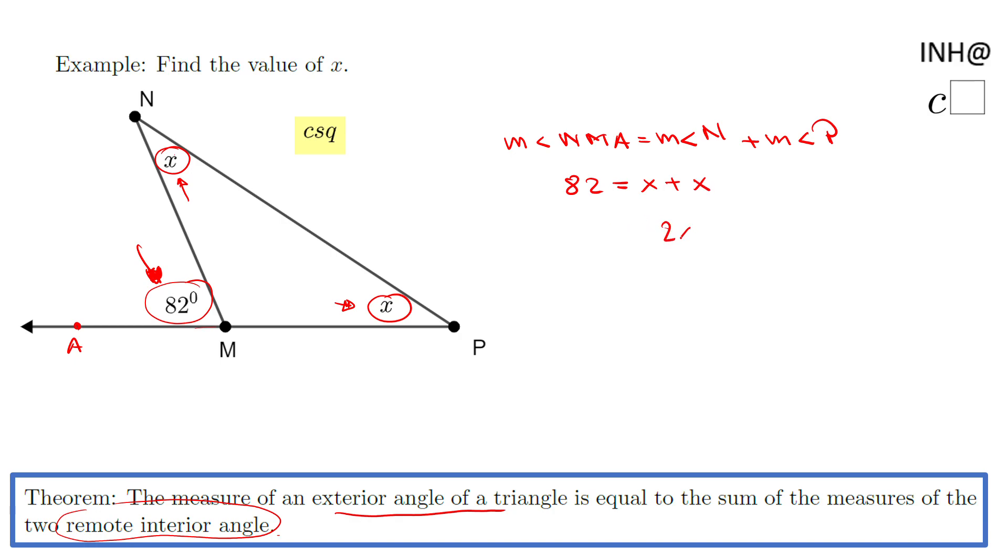We have 2x equals 82. Divide by 2 and we have x equals 41.